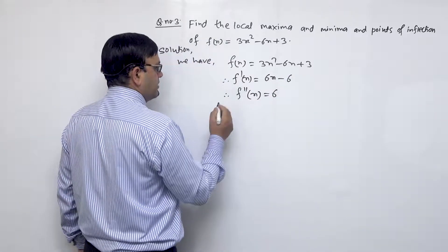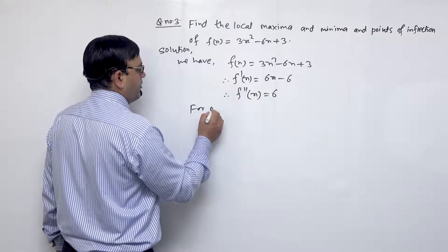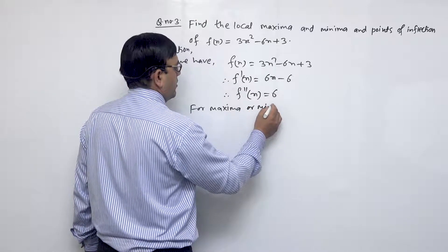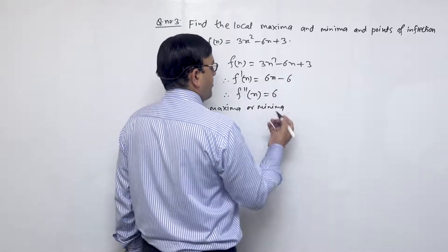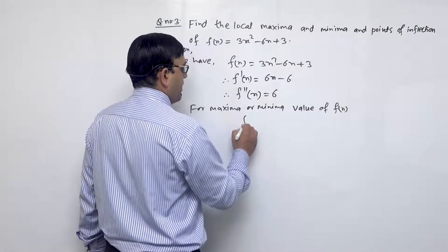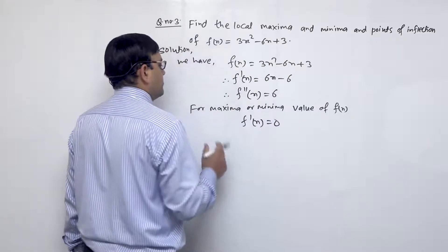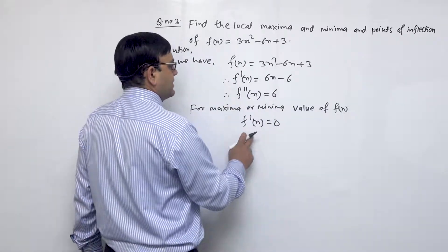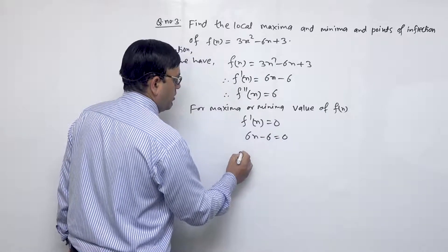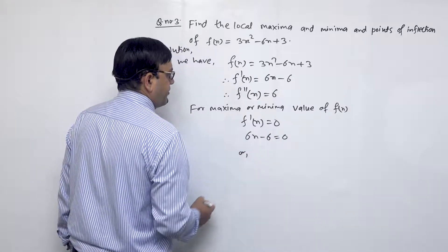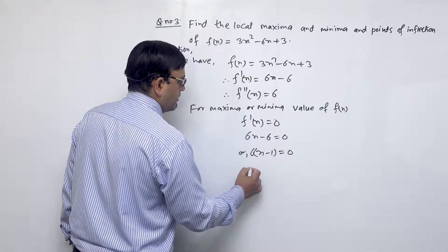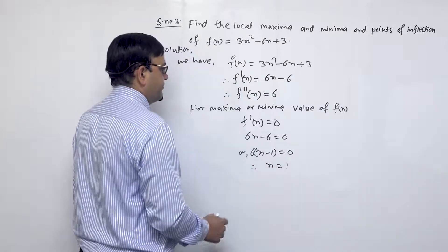For maxima or minima, we set f'(x) = 0, which gives 6x - 6 = 0. Taking 6 as common, x - 1 = 0, therefore x = 1.